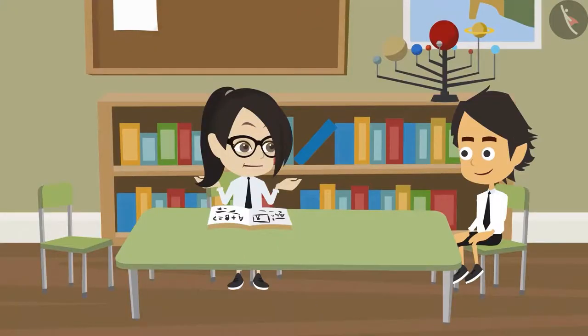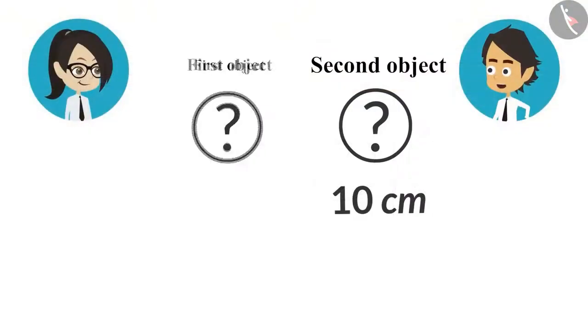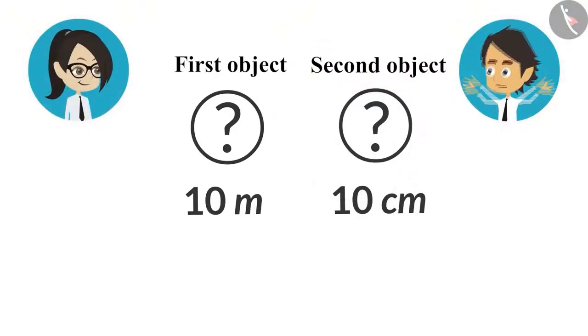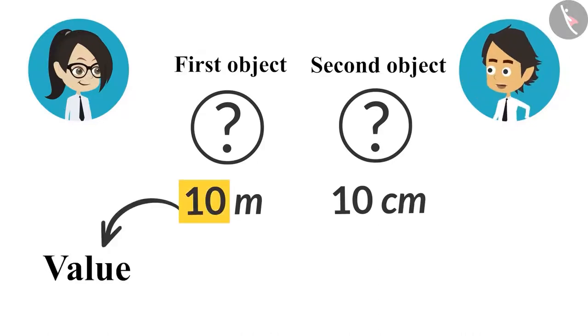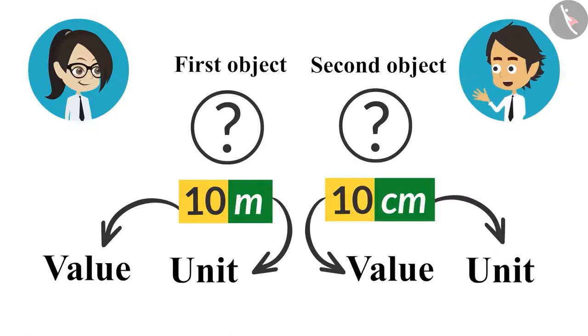Meaning? For example, in this question, the length of the first object is given as 10 meters. This means that 10 is the value and meter is the unit. Both are important to find the length of any object.